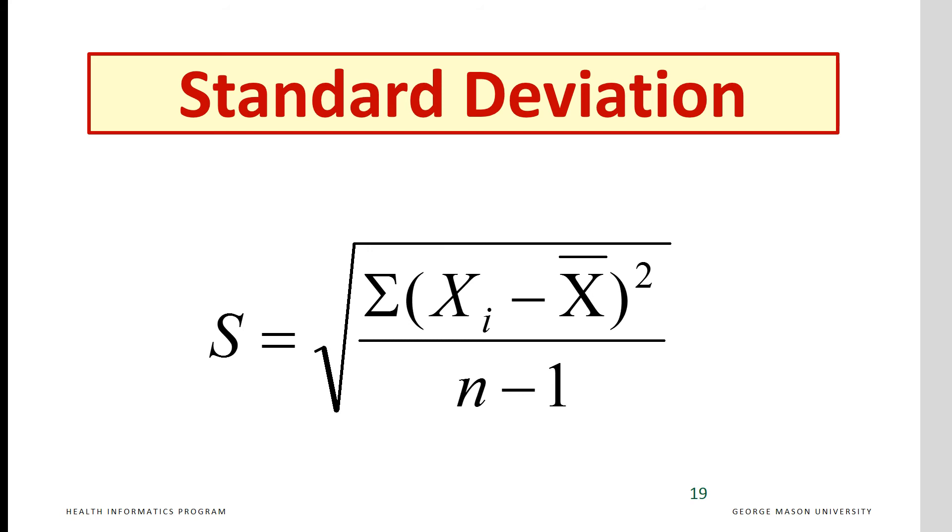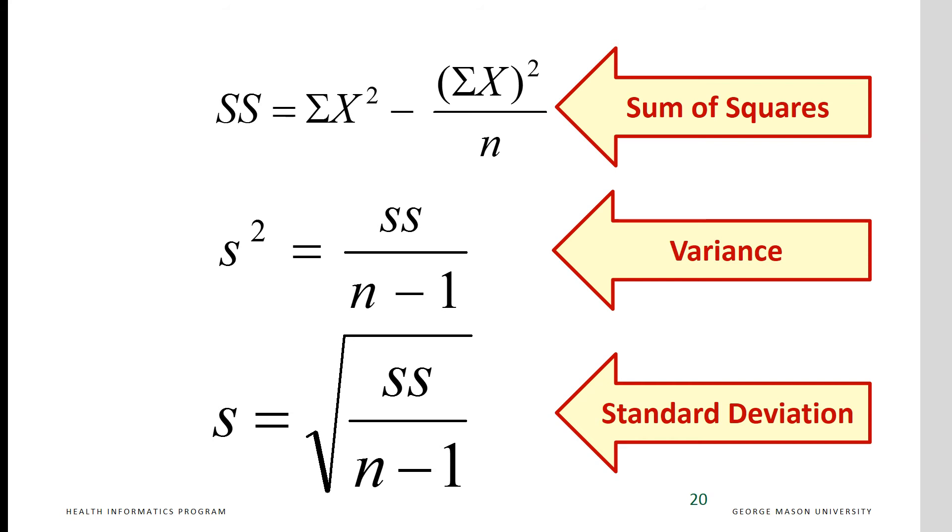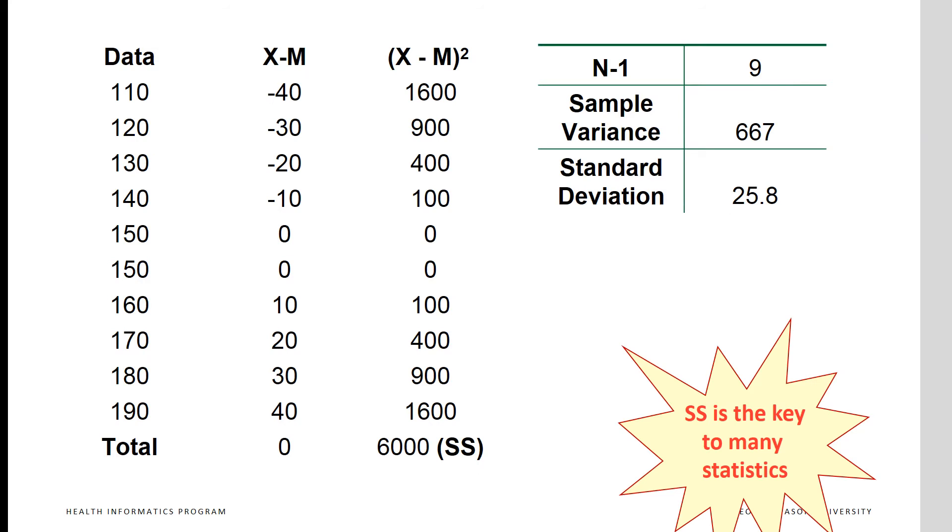Standard deviation is the square root of the variance. The sum of squares is the key to calculation of sample variance and sample standard deviation. Here we see some data. First, we calculate the difference between each observation and the mean. For example, 110 minus the mean is minus 40. Then we square this difference to get 1,600 and we sum the squares. The sample variance is the sum of squares divided by n minus 1, and the standard deviation is the square root of the sample variance.